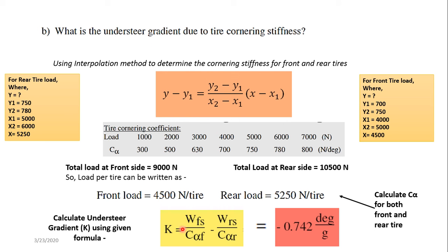The understeer gradient formula is: K = WFS/CαF − WRS/CαR. Substituting CαF, CαR, WFS, and WRS from the interpolation results and given values, the answer comes out negative. A negative K value indicates an understeer condition — not oversteer. The calculated understeer gradient is −0.742 degrees per g.